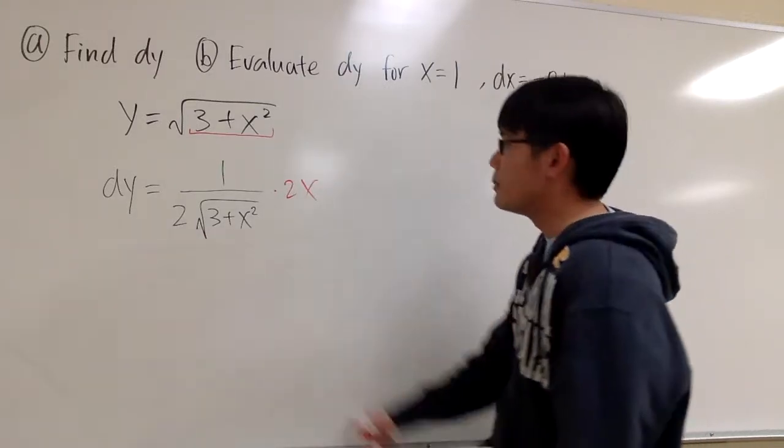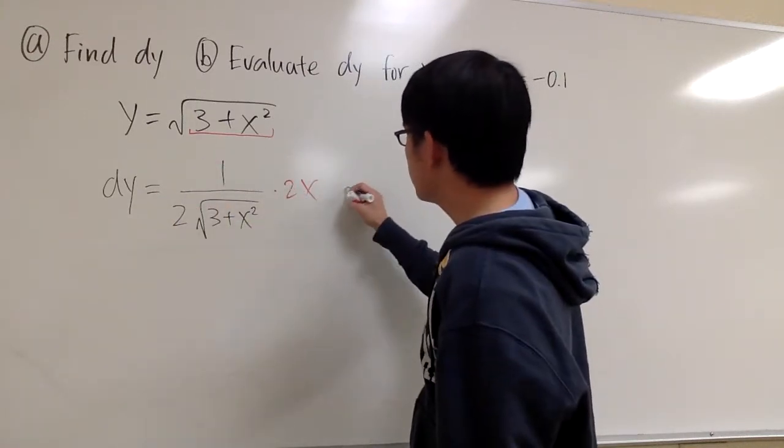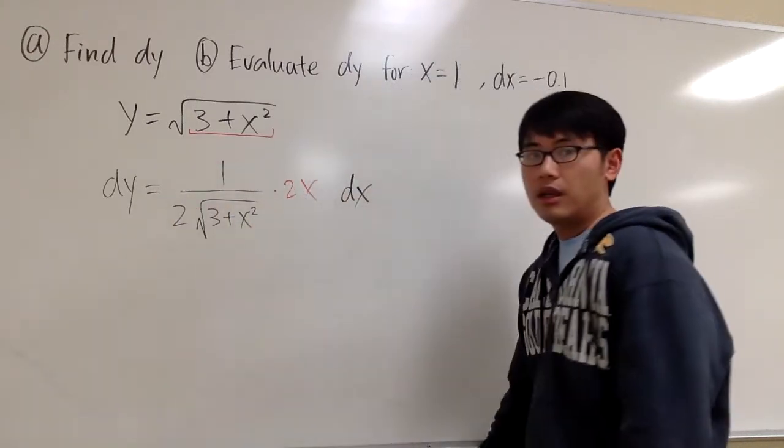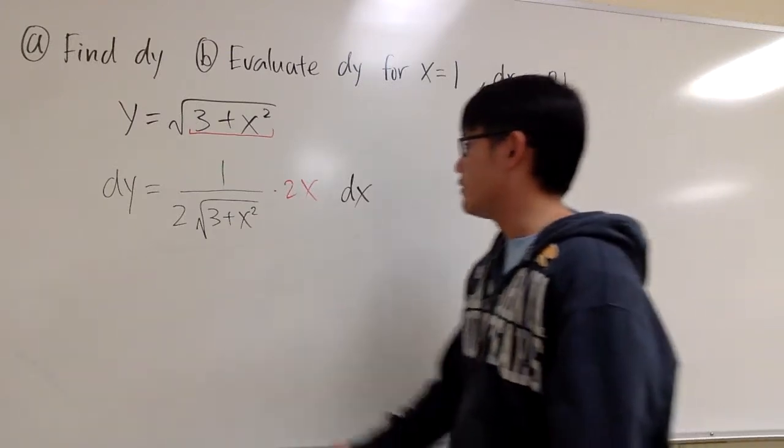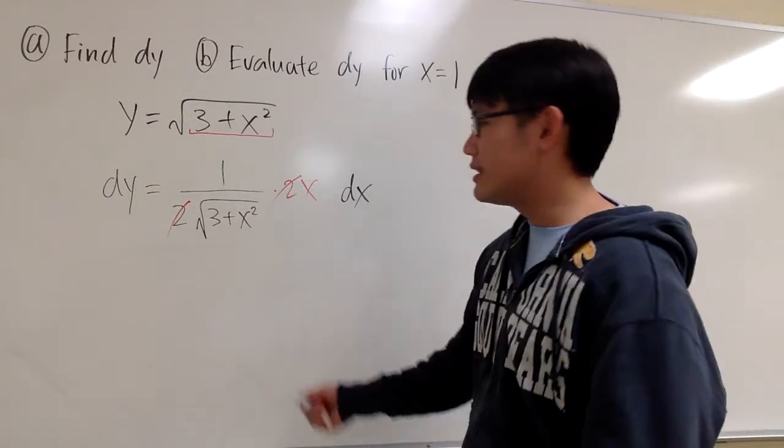And in this case, we are talking about differential, so dy equals the derivative times dx at the end. And perhaps we can do some simplification, which is we can cancel the 2 and put things nicely.